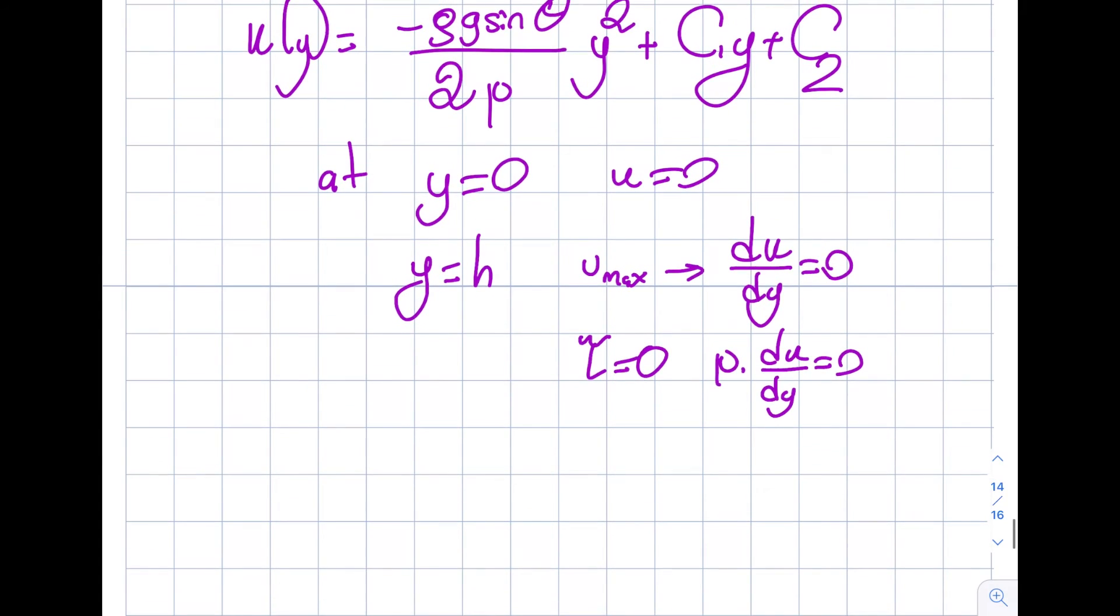So then I have two equations, two unknowns. Let's just do it. Let's use the first one and I get 0 is equal to minus rho g sine theta divided by 2 mu, 0 square, plus c1 times 0 plus c2. Well, you see from here that I got my c2 is 0.